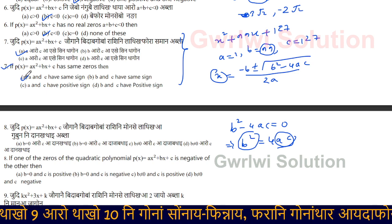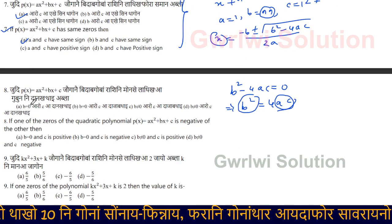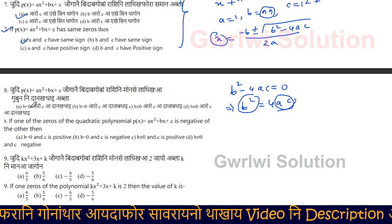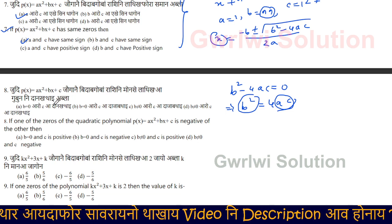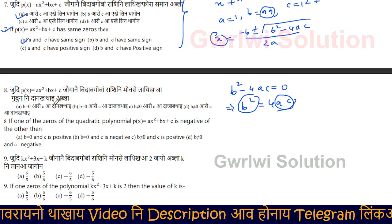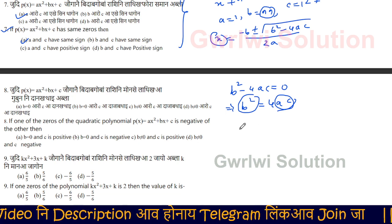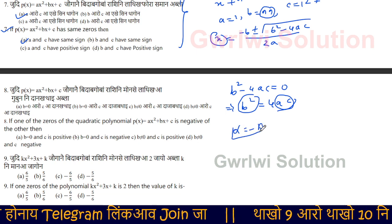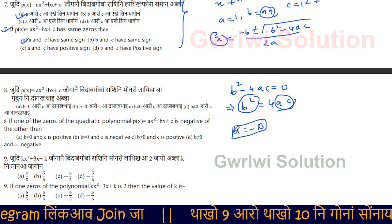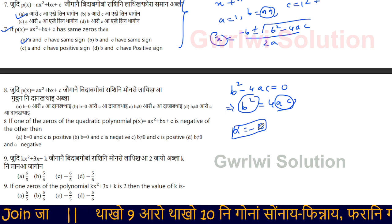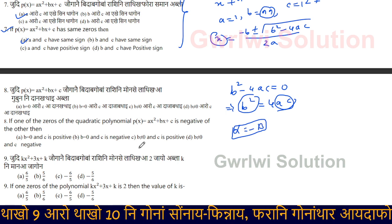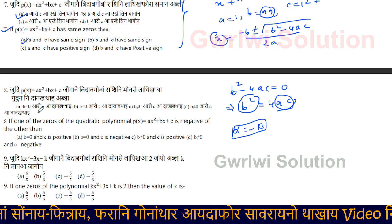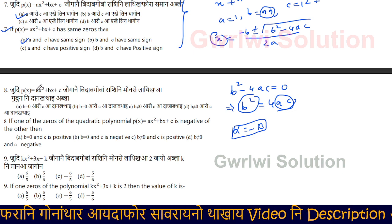Option number 7: If p(x) equals x squared plus dx plus 3, you can see that it is equal to 0. That means it is equal to 0. So we can see alpha plus 2. It is equal to 1.